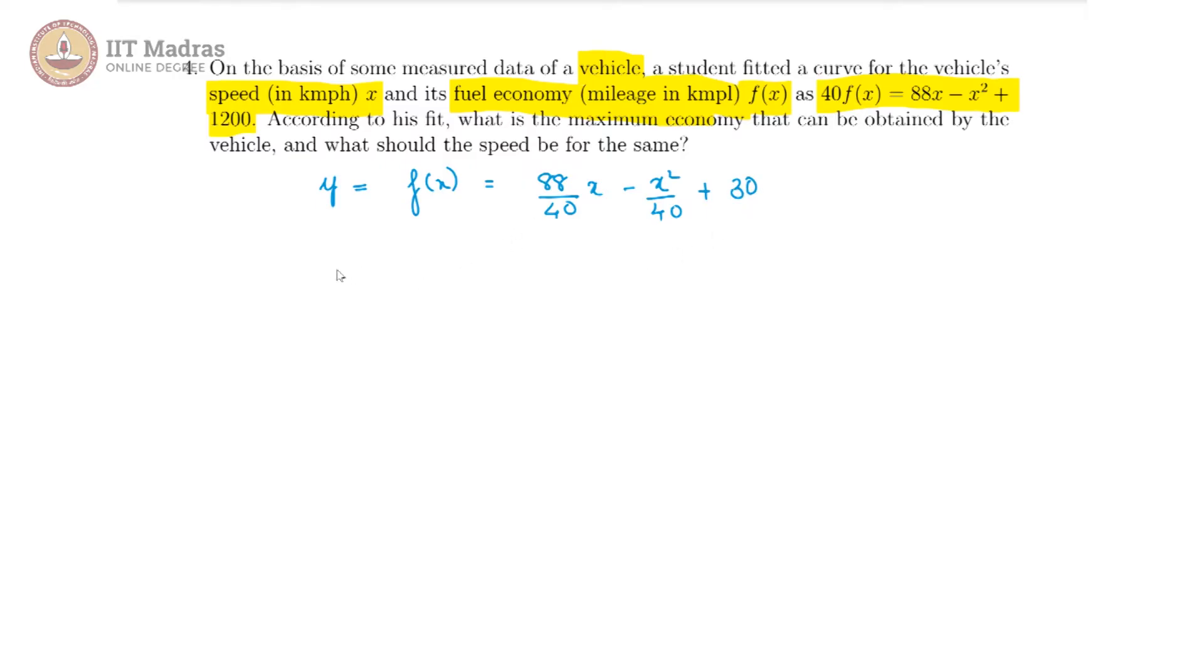So we have the situation where a, the coefficient of x square is minus 1 by 40, which is equal to minus 0.025. And b is the coefficient of x, which is 88 by 40 and that is 22 by 10, therefore equal to 2.2. And lastly, c is equal to 30.